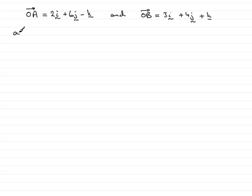Now, in part A, we're given the position vectors of A and B. So that's O to A, not just A. So often I see people write this - it's O to A. O to A equals 2i plus 6j minus k, and O to B is 3i plus 4j plus k. And we're asked to find the vector A to B.